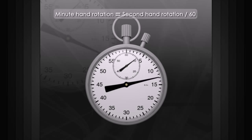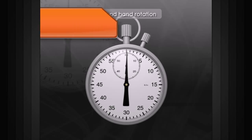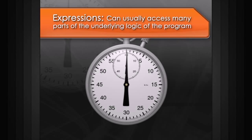Let's take this one step further and set up an expression to move our second hand. Expressions can usually access many parts of the underlying logic of the program. In this case, we want to read the current frame, usually called frame.